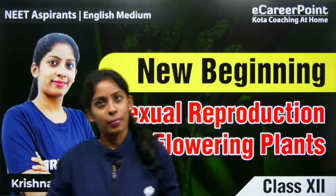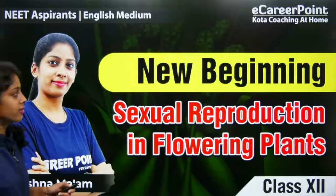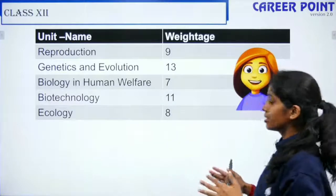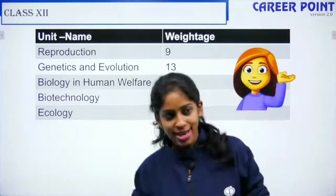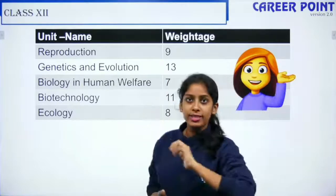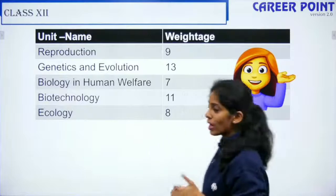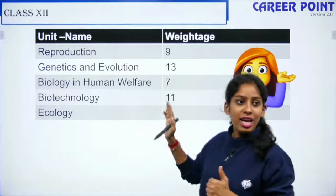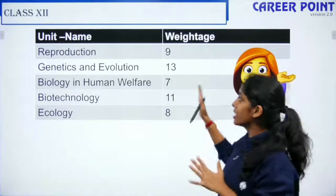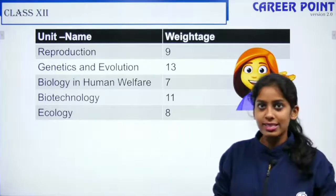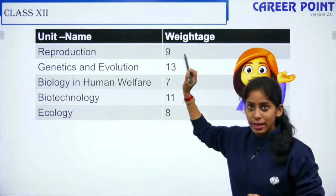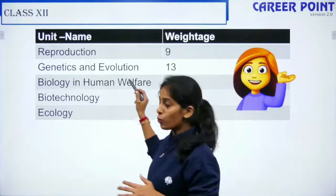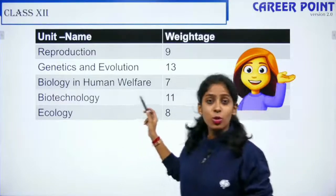Let me tell you what the chapters in Class 12 are, according to 2020 NEET paper analysis. You have five units in Class 12: Reproduction, Genetics and Evolution, Biology in Human Welfare, Biotechnology, and Ecology. The weightage: Reproduction has 9%, Genetics and Evolution has 30%, Biology in Human Welfare has 7%, and Biotechnology has 11%.